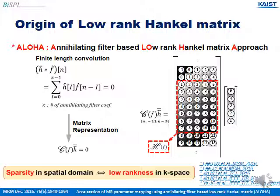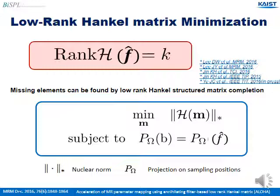This finite-length convolution operation can be represented in matrix form. Since F[n] has infinite length, we use the cropped convolution matrix called the Hankel matrix. The multiplication of the Hankel matrix and the annihilating filter should be zero. Therefore, the Hankel matrix should be rank deficient. The most interesting part is that we found the rank of the Hankel matrix in the transformed domain is equal to the sparsity of the original domain. So the reconstruction problem can be formulated as a minimization problem for the rank of the Hankel matrix, and the missing elements of K-space can be found by low-rank Hankel structured matrix completion.